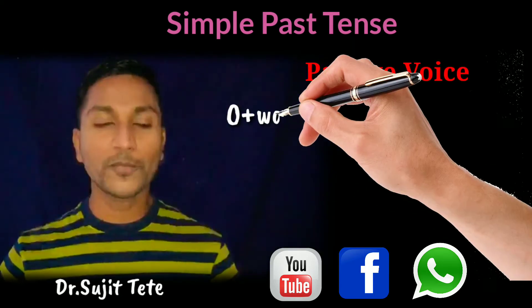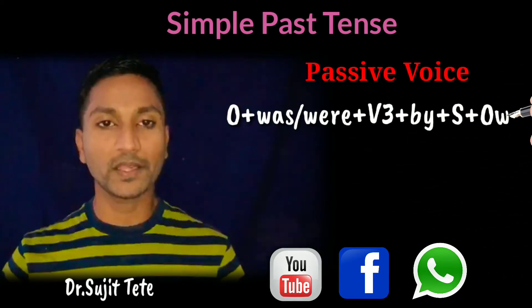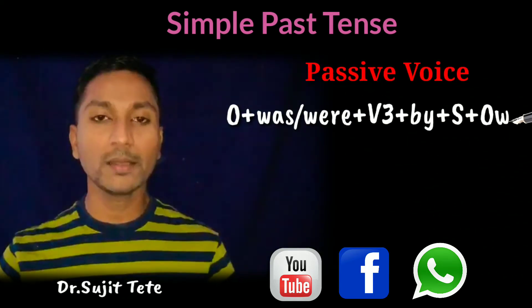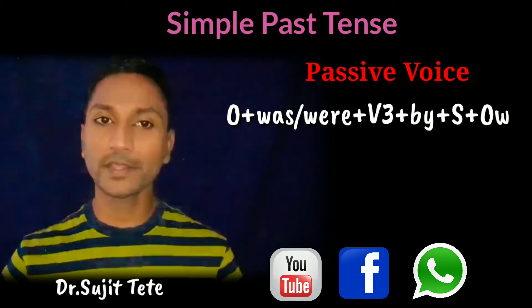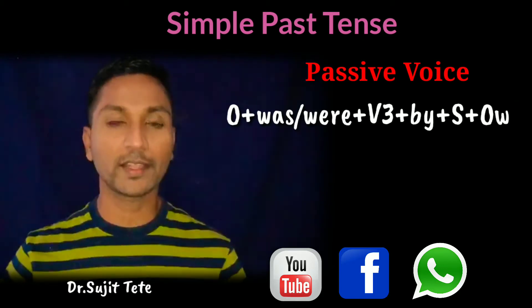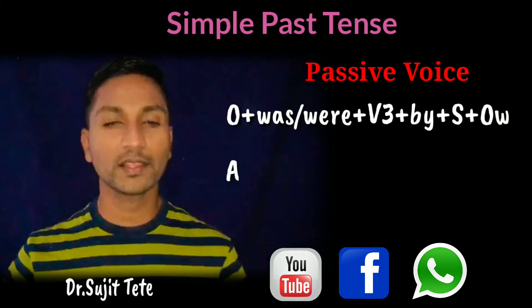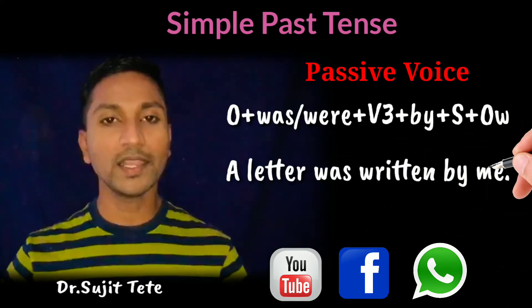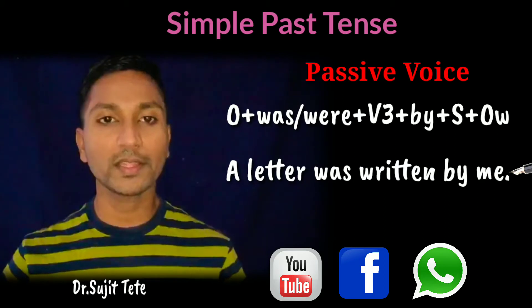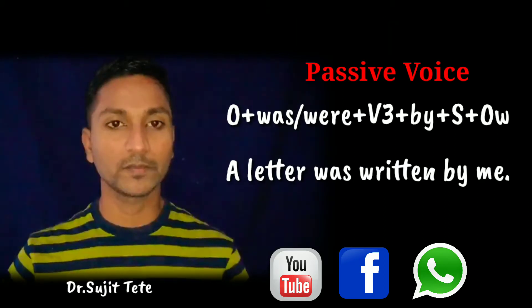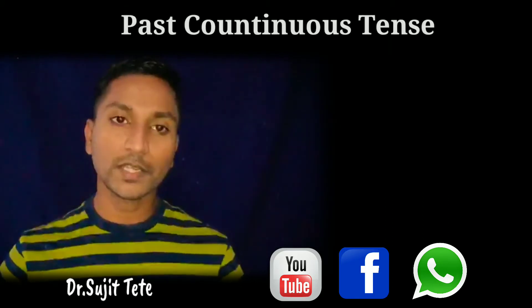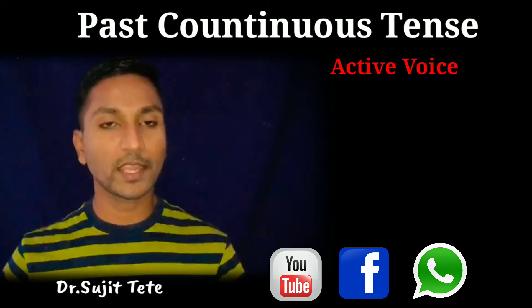The passive structure is: object plus was or were plus V3 plus by plus subject plus other words. The example is: a letter was written by me. Now, the past continuous tense.